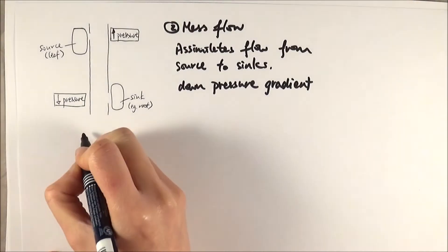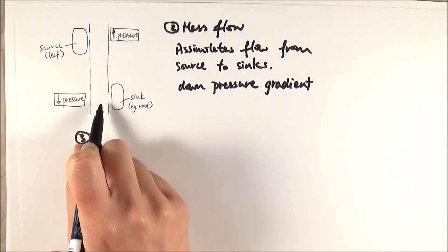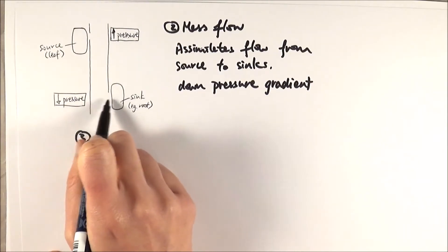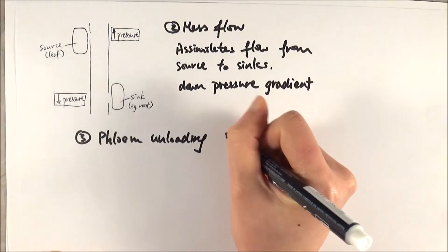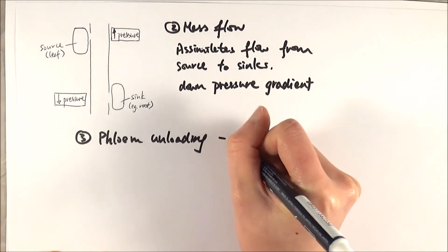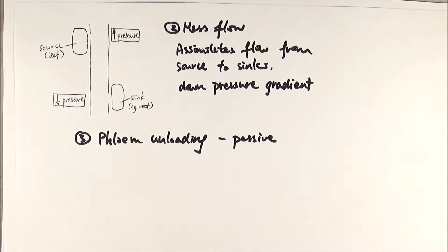And finally, we get to the third step, which is phloem unloading. So once you get to the sinks, you want to unload the assimilates from the phloem to the actual cells. And again, this is a very straightforward process, and it is a passive process because it doesn't actually require any energy at all.